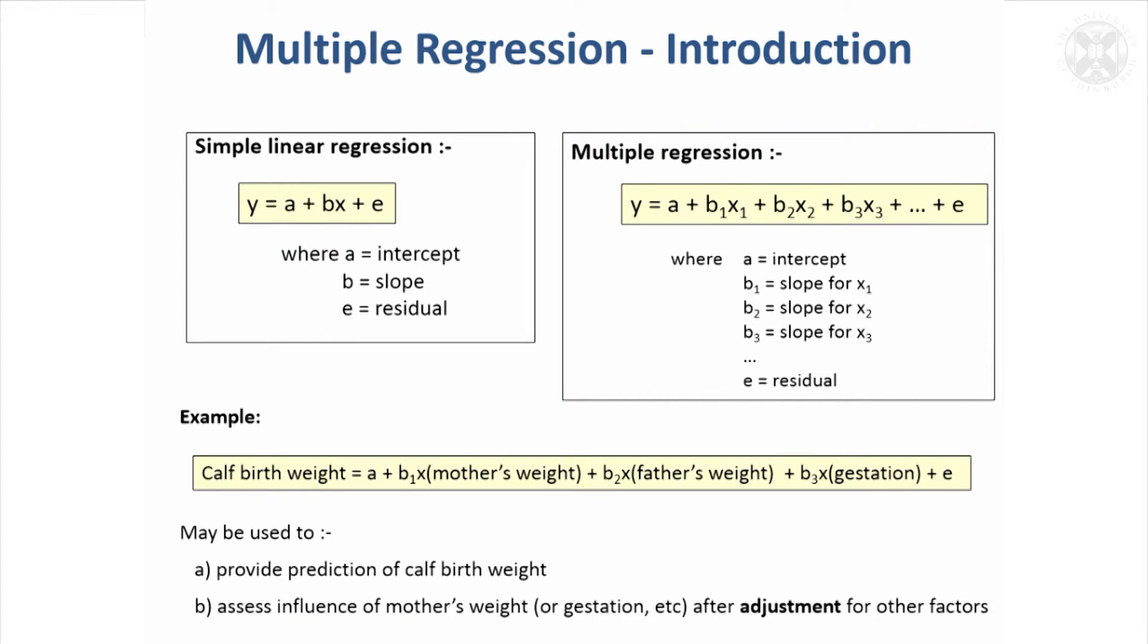For example, you might be in a situation where you've measured calf birth weight and you know the mother's weight, the father's weight, the gestation of the calf. This would be a multiple regression equation trying to predict calf birth weight from those factors. That might be quite useful because it might help you predict in the future how heavy calves of certain parents are going to be based on multiple measurements.